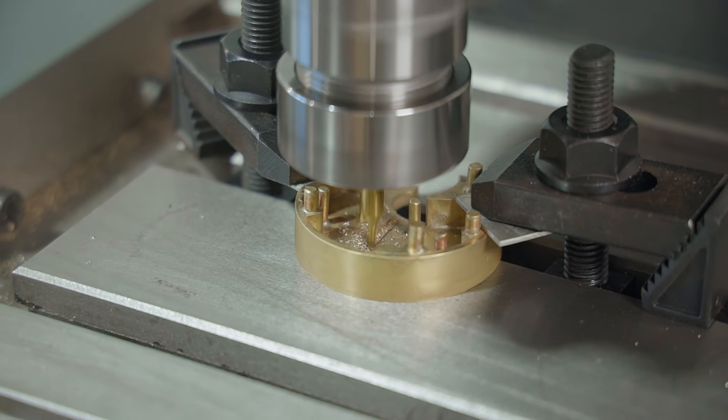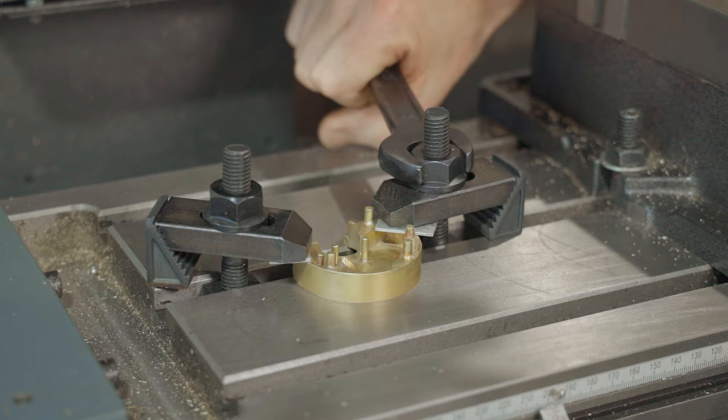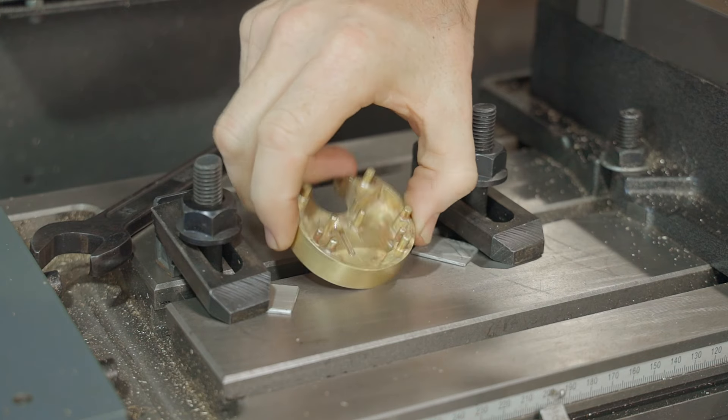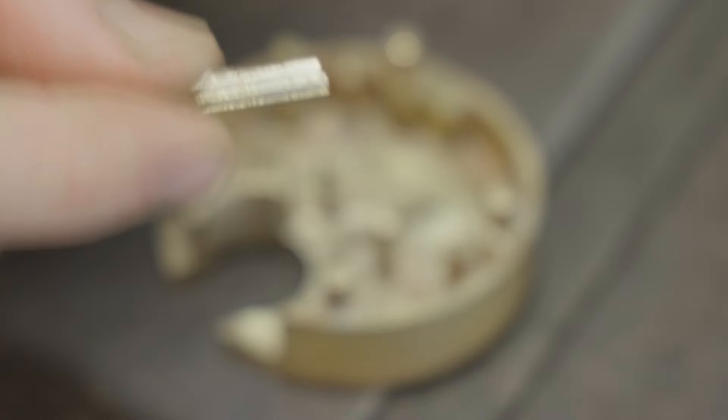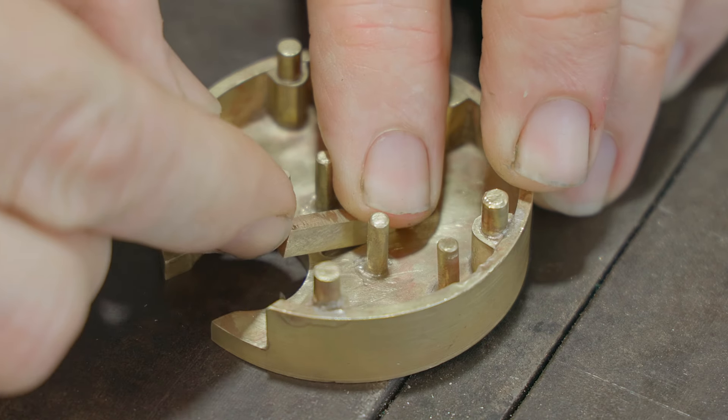The key will give the shackle something to glide on and keep it in the correct position inside the case. I've got this small scrap of brass to use for a key and next I'll fit that into the slot.